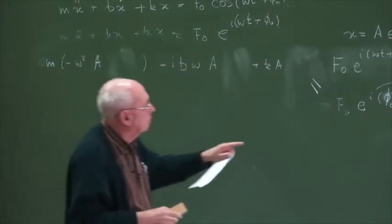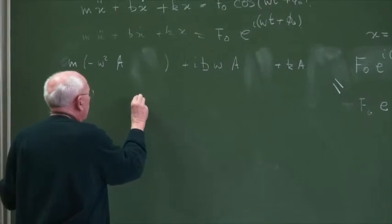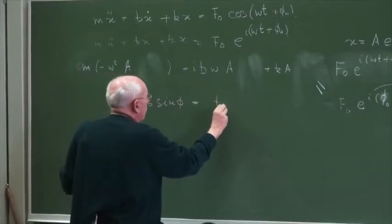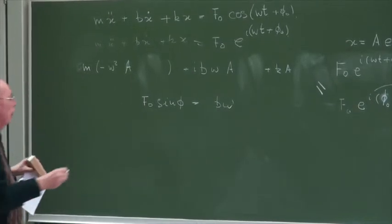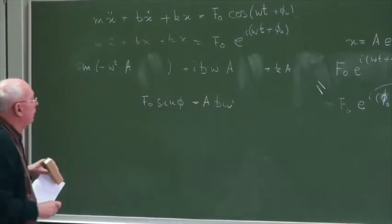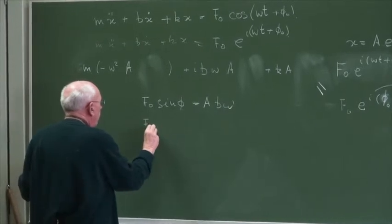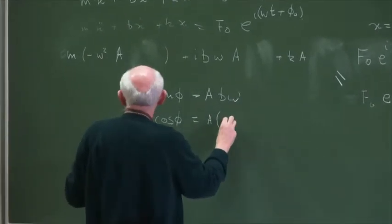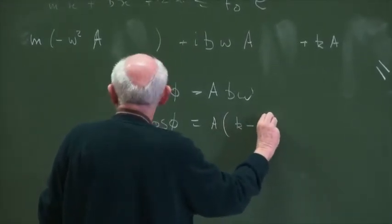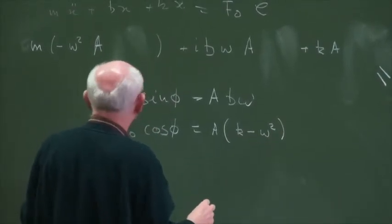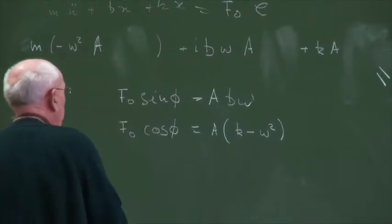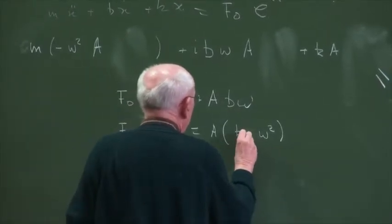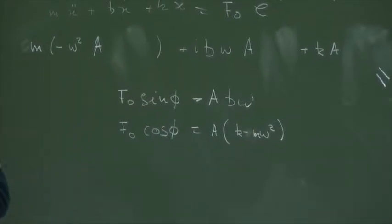What we now see is: F zero sine φ equals b·ω times A, and F zero cosine φ equals A times (k − mω²). We can divide these two equations to get tangent φ equals b·ω divided by (k − mω²), and that determines the phase difference between the two solutions.